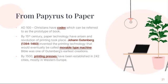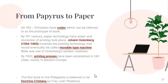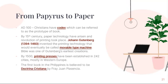This drastically changed European lives when information was made available to them. It altered the church, science, arts, and politics, which led to the Industrial Revolution in the 17th century. The first book in the Philippines is believed to be Doctrina Christiana by Frey Juan Plasencia.